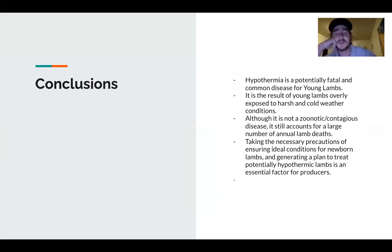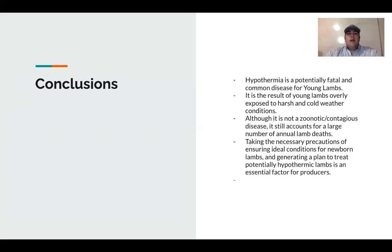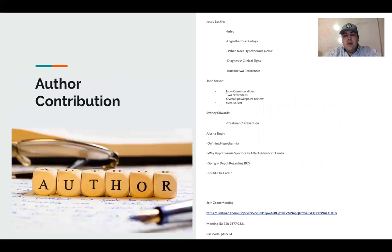In conclusion, hypothermia is a potentially fatal and common disease for young lambs. It is the result of young lambs being overly exposed to harsh and cold weather conditions. Although it is not a zoonotic or contagious disease, it still accounts for a large number of annual lamb deaths per year. Taking the necessary precautions of ensuring ideal conditions for newborn lambs and generating a plan to treat potentially hypothermic lambs is an essential factor for producers. We also have our references and author contributions showcasing what everyone did — a team effort. Thank you and have a wonderful day.